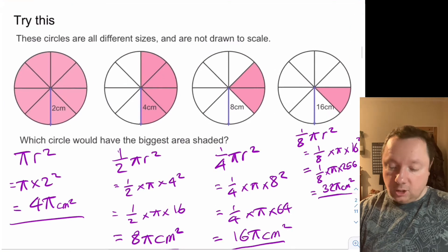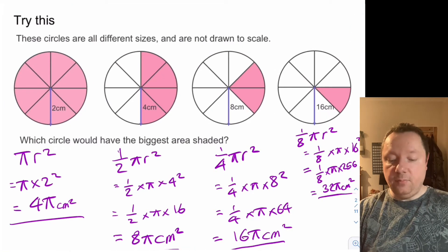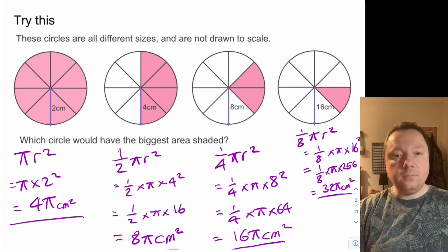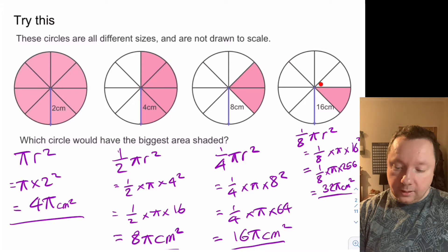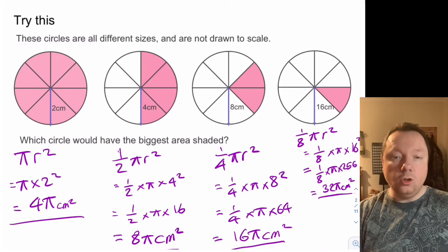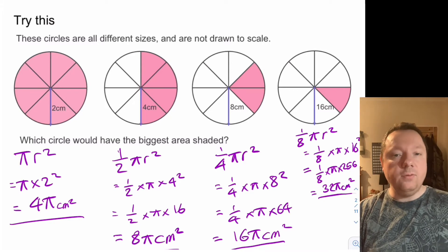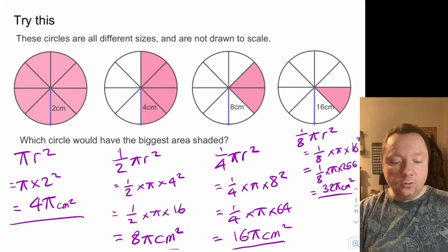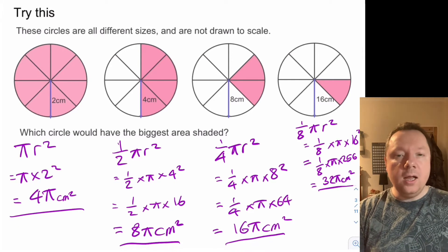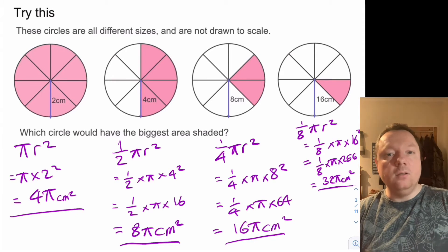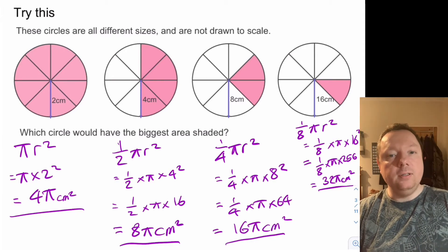Which is even bigger. So the biggest one is actually this last one because it isn't drawn to scale. That little activity should have shown you that when you square a number it gets a lot bigger, even though you're going to half it.